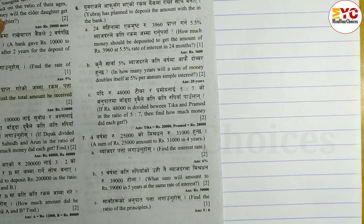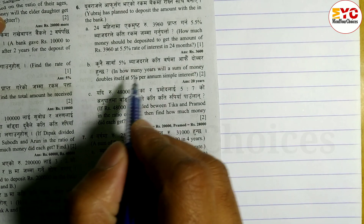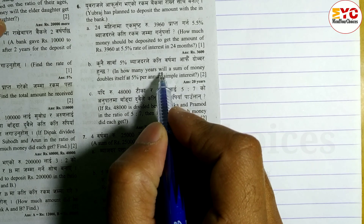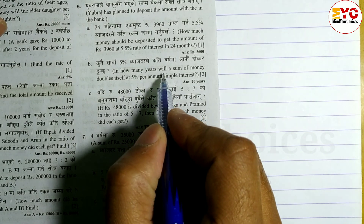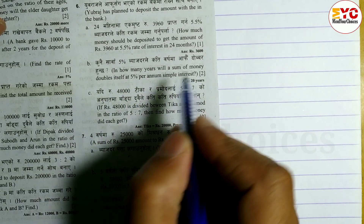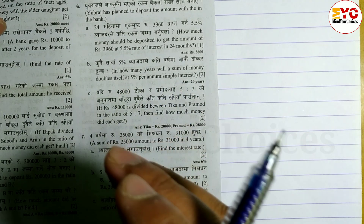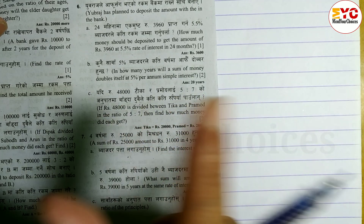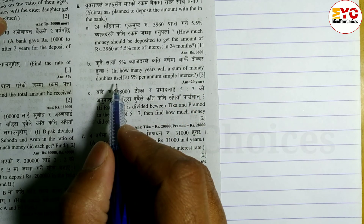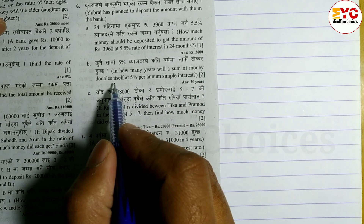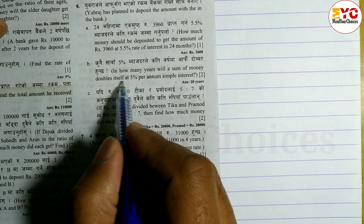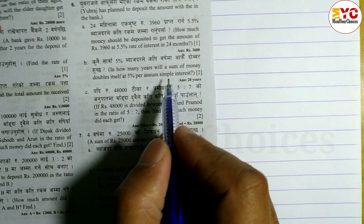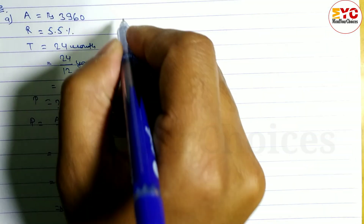Now look at question number B. Question B ma question le bhaneko cha: in how many years will the sum of money double? Kati saal ma sum of money double bane ga? Jati paisa raakheko cha, tyo double bane ga — principal double huncha itself in 5 years — per annum simple interest.